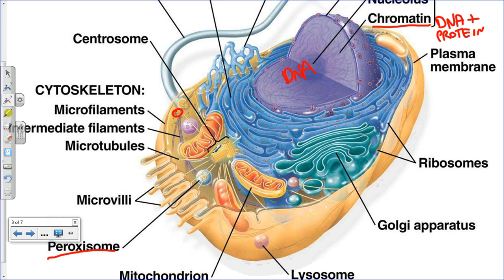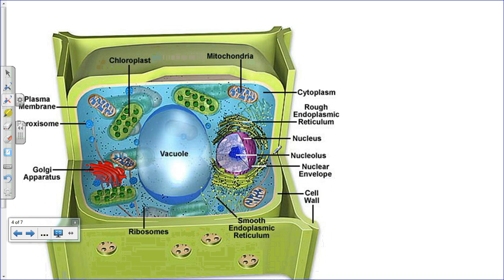Centrosomes and centrioles are found only in animal cells. They are used for making spindle fibers — microtubules — during mitosis and meiosis.